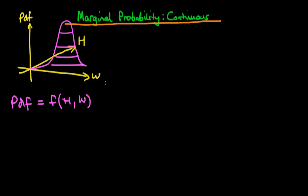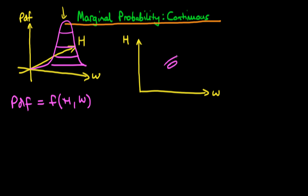Let's think about how we might represent this in other ways, other than 3D, because it's a little bit complicated to keep redrawing. If we were to look down on this image from above, we could draw the contour lines on an axis across both height and weight. We might suppose that height and weight are quite highly correlated, so the contour lines might look something like those I'm drawing now, with a strong orientation along the y equals x line.